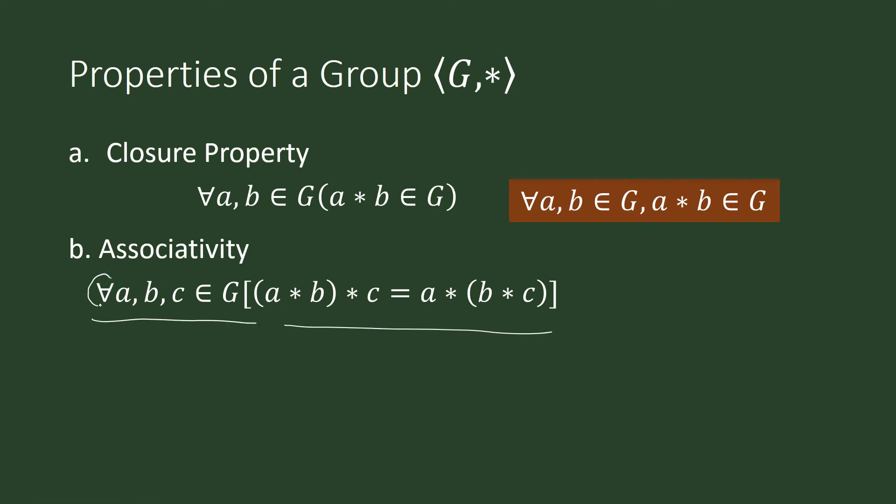So, again, that symbol there, that means for all, or every. Our understanding here is we will apply the operation first on a, b, and then we will apply the operation on the results of this and this. If this result is also equal to this, wherein we change the grouping of our operation, then we shall conclude that the operation is associative in this set g.